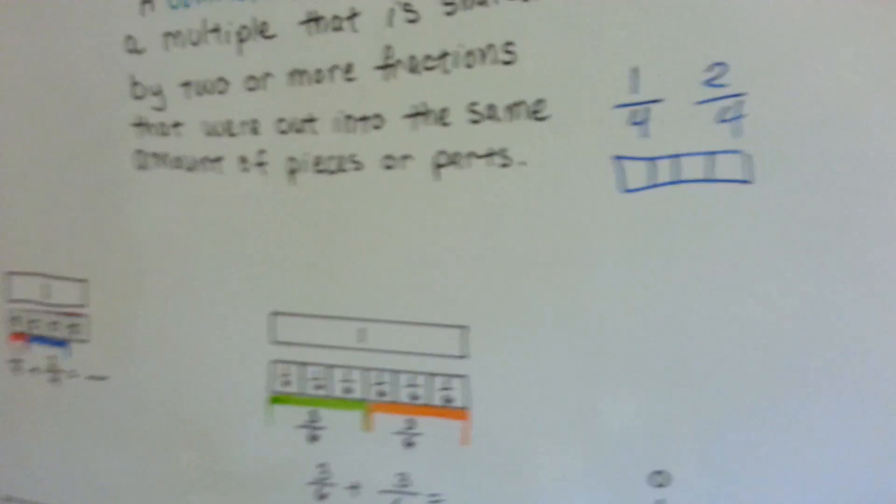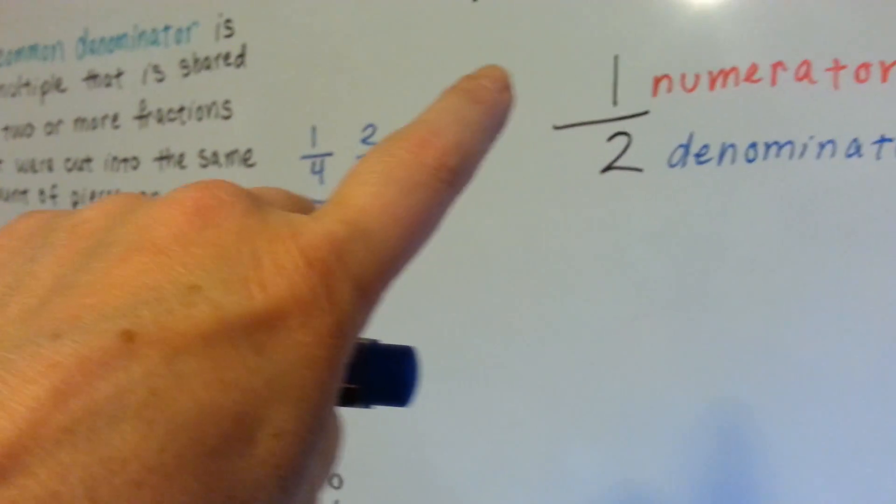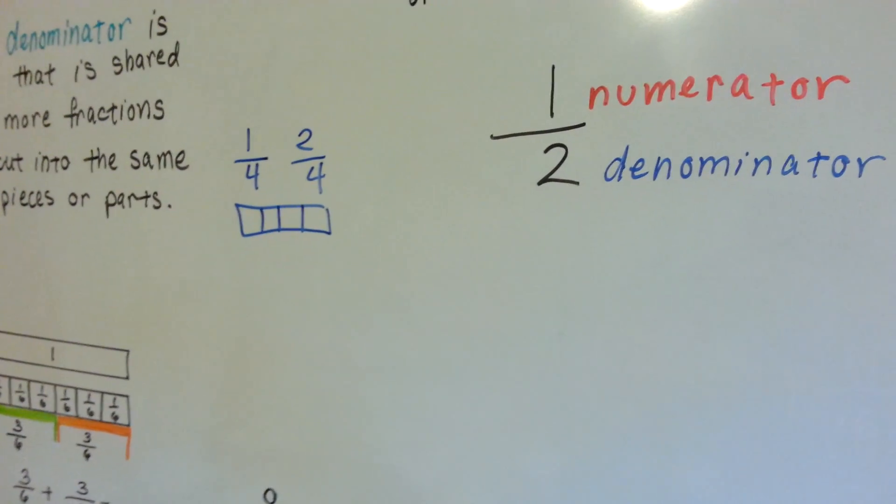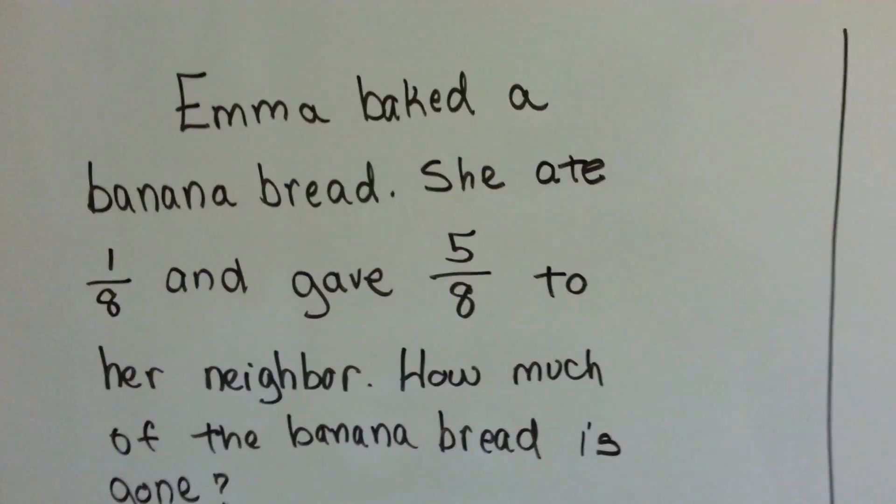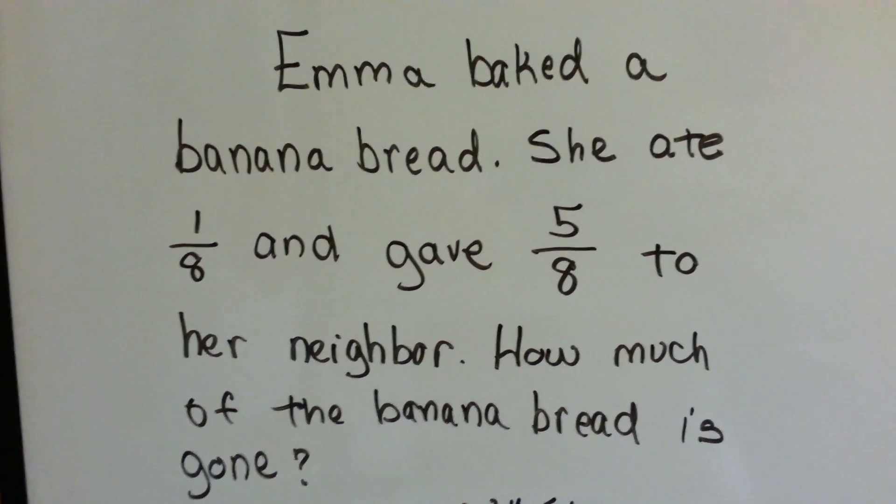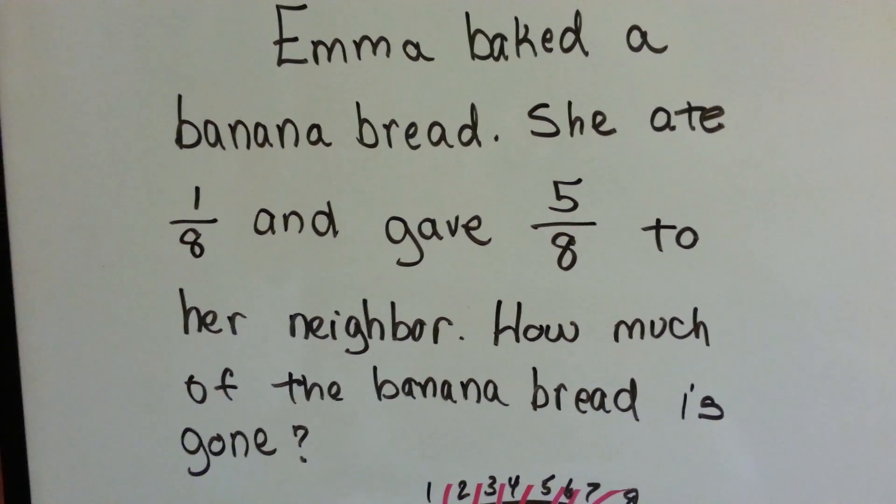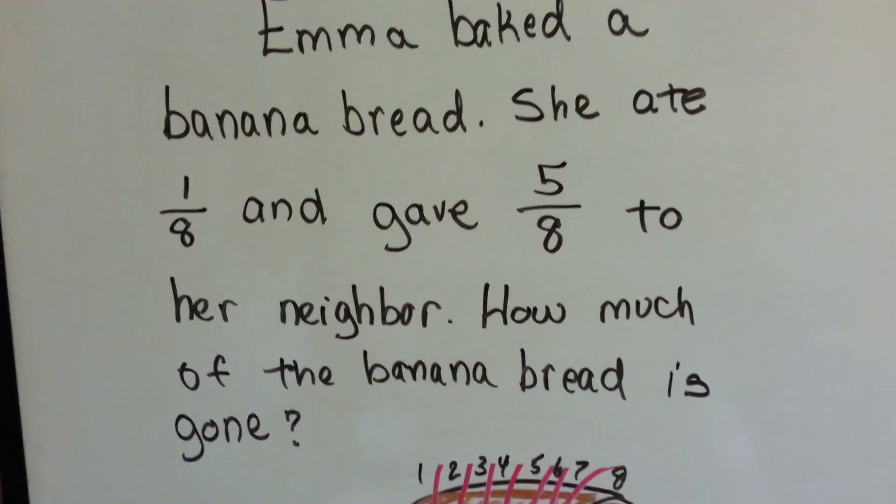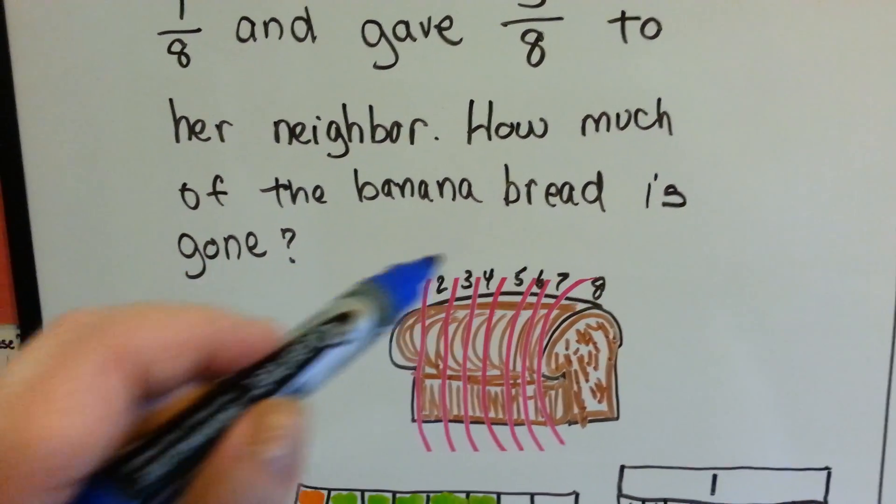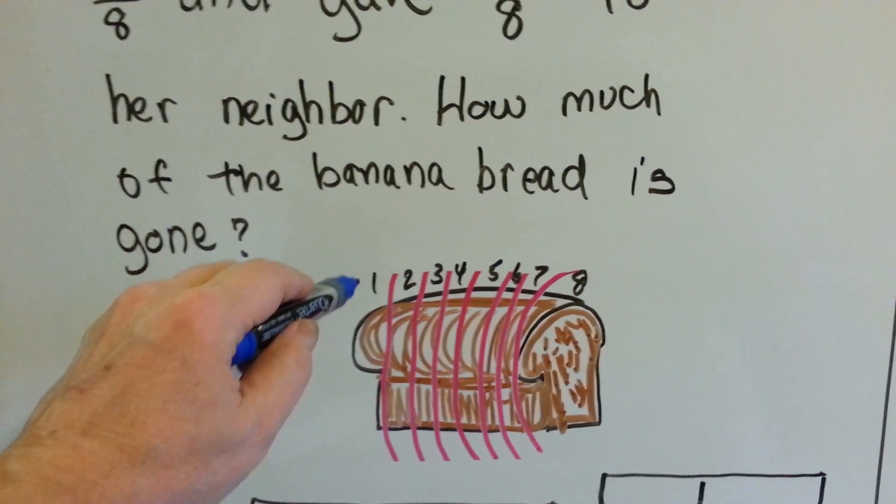The other thing I want to go over real quick is the top number is the numerator and the bottom number is the denominator. So let's see what Emma's doing. She baked a banana bread. She ate 1 eighth of it and gave 5 eighths to her neighbor. So how much of the banana bread is gone?